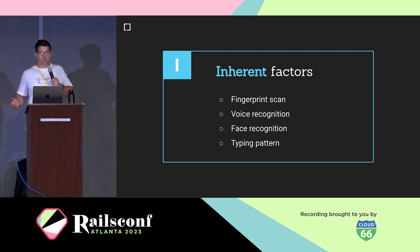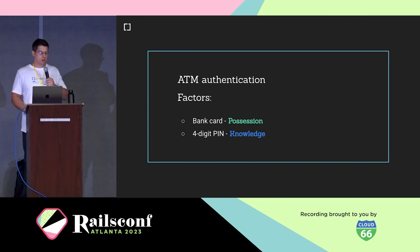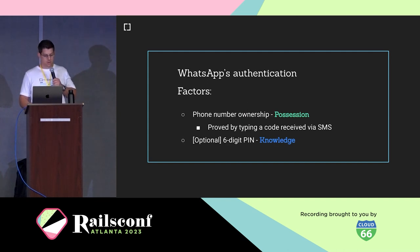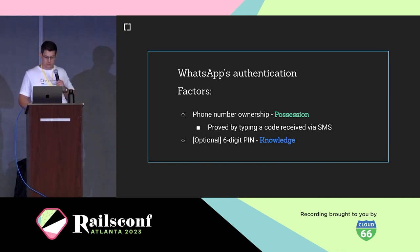Ideally an authentication system will have all three, but for some consumer applications that might be too much. For example, ATM authentication has two factors: the banking card as a possession factor and a four-digit PIN as the second factor. WhatsApp's authentication uses possession of the mobile number as the first factor, and optionally a six-digit PIN as a knowledge factor.